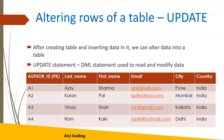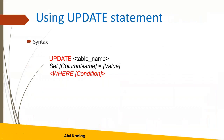Suppose for one of the columns, we wanted to update any of the email IDs in a particular row — let's say for A2, we wanted to update the email ID. Or perhaps a city needs to be updated. So with the UPDATE statement, we can do that.